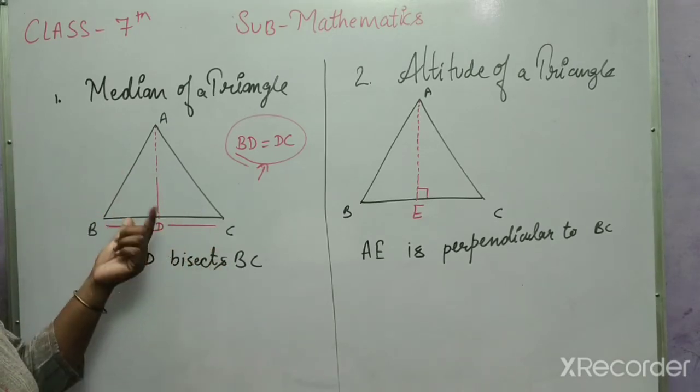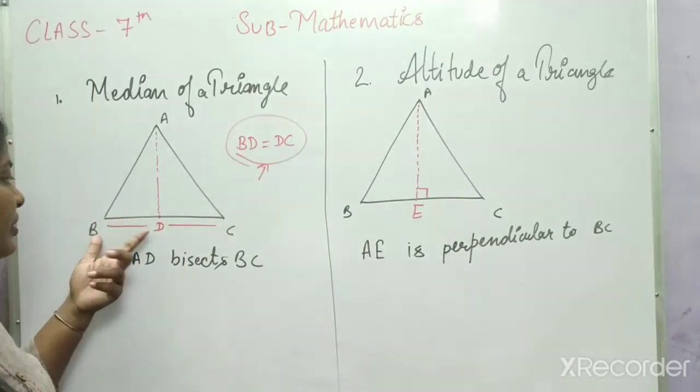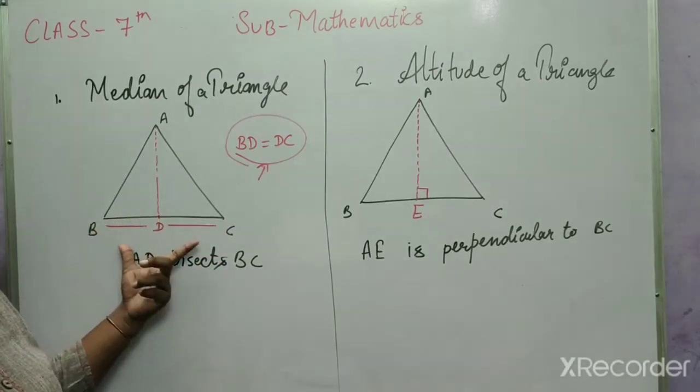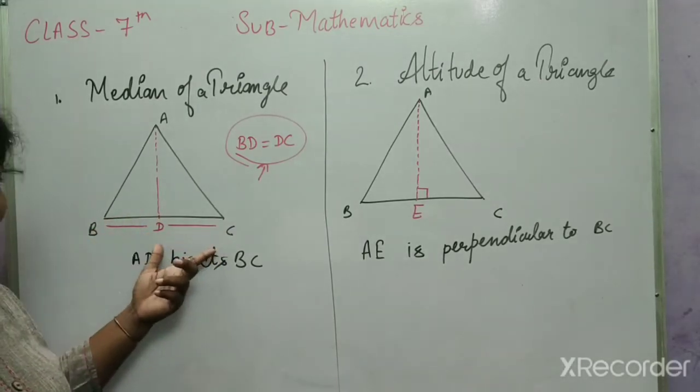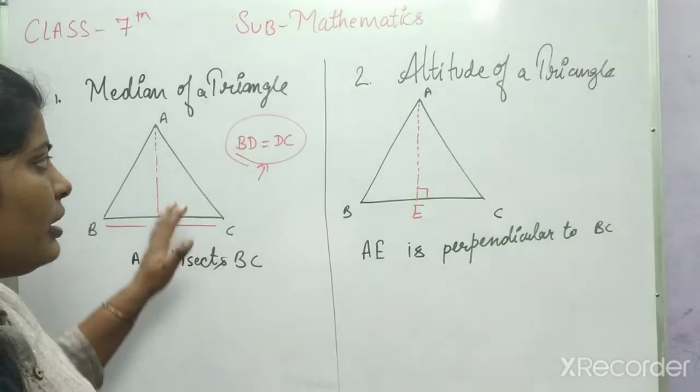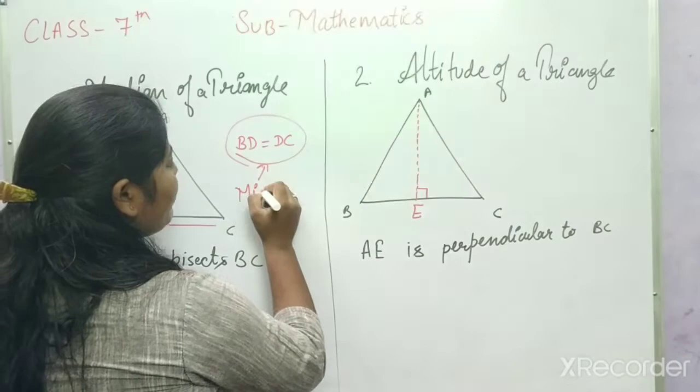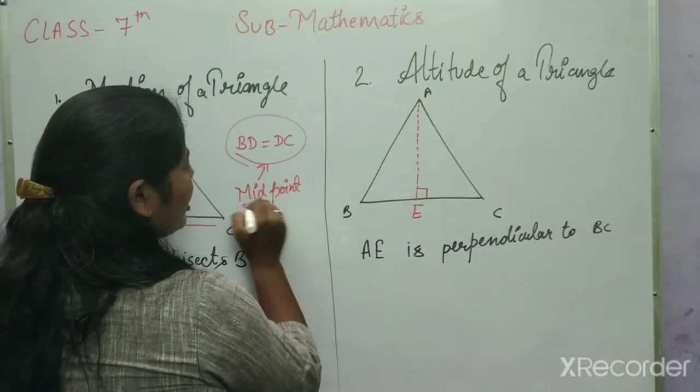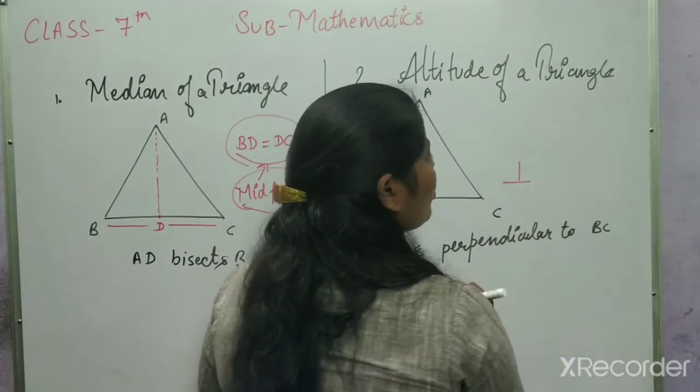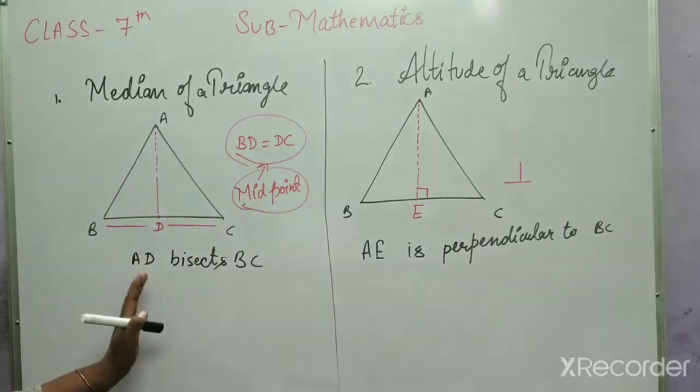In median, a vertex joins the opposite side midpoint. If BC is 6, then D joins at 3. So BD equals 3, and these two sides are equal. In altitude, you draw a 90 degree angle to opposite side. Median means midpoint join, and altitude means perpendicular.